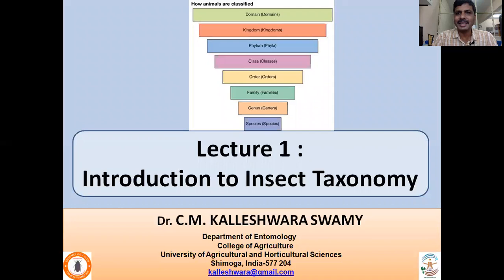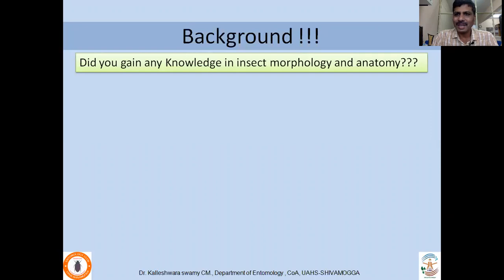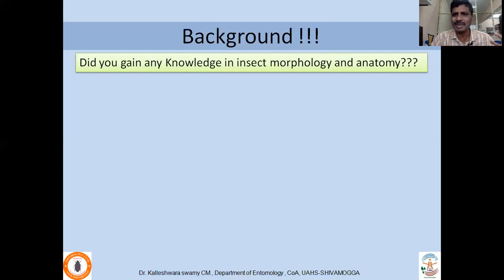So what did we learn in the Morphology and Anatomy section of this course, Fundamentals of Entomology? If you have some basic knowledge of morphology and anatomy, it is very easy to understand Insect Systematics. We studied the basic types of mouthparts and their modifications, legs — their basic structure and modifications. So that means there is a lot of diversity among insects.